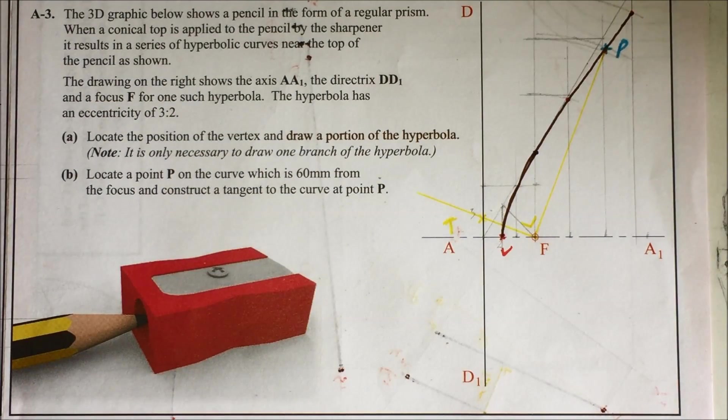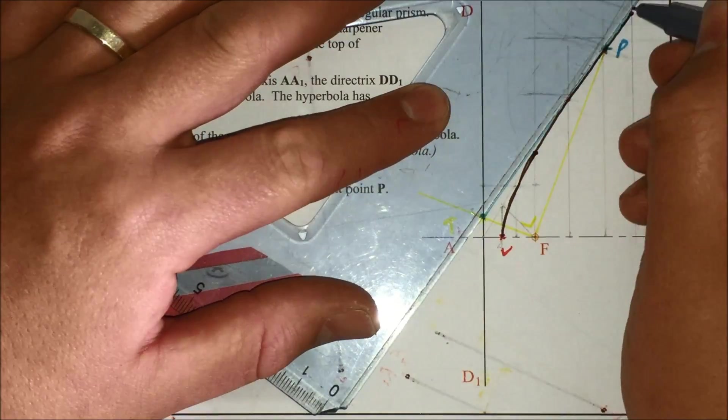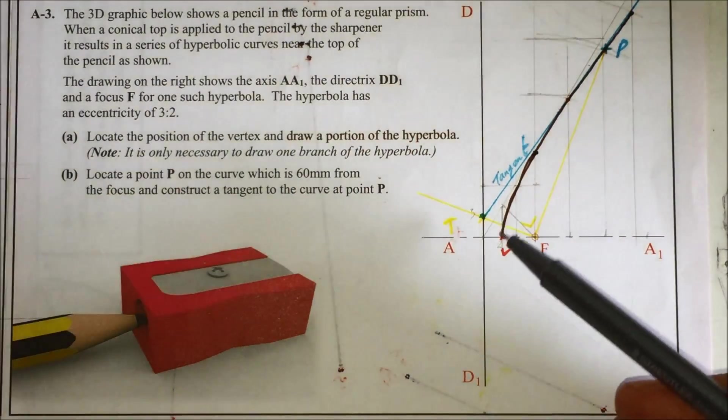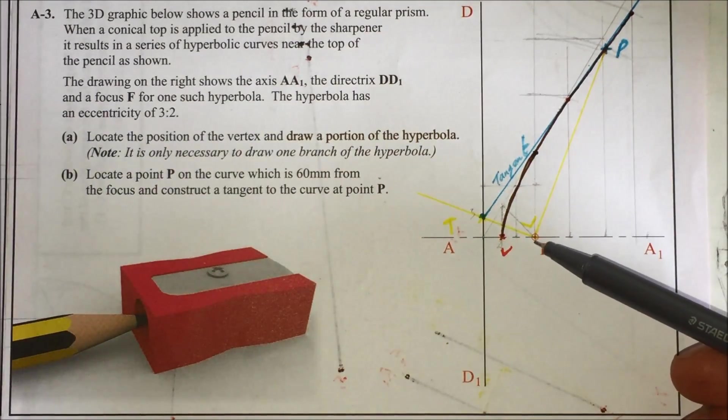So when you hit your directrix here, we call that point T. And if you were to extend your tangent, it would go to that point T. So I'll join that point T back to point P and that will give you your tangent. So that's your tangent to your point P on the curve, which is 60mm away from the focus.